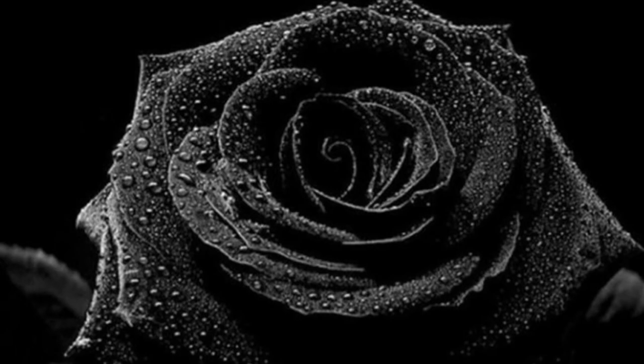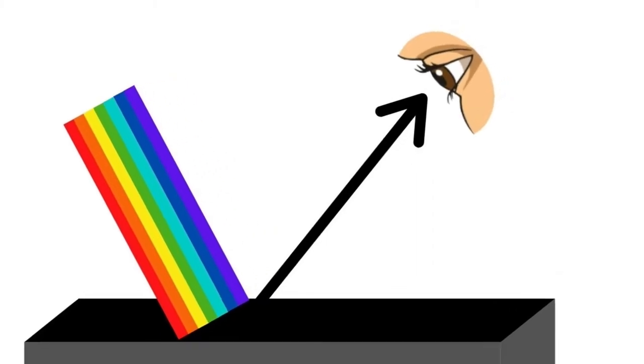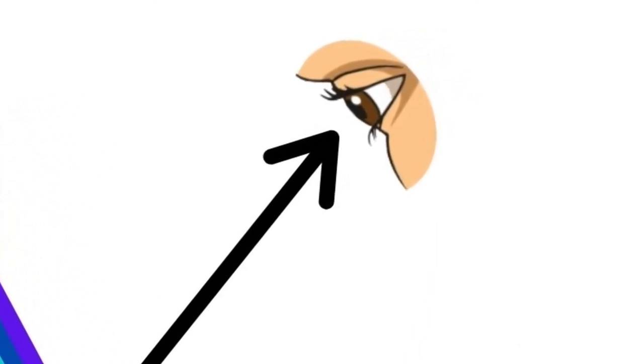Black is the darkest color. It is an achromatic color, a color without hue. In the visible spectrum, black is the absorption of all colors. It can be defined as the visual impression experienced when no visible light reaches the eye.